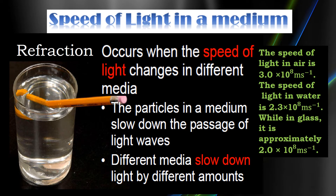Refraction of light is caused by the difference in speed of light in different media. For example, the speed of light in air is approximately 3 × 10⁸ meters per second. However, when light travels through a medium such as water or glass, its speed decreases. The speed of light in water is approximately 2.3 × 10⁸ meters per second, while the speed of light in glass is approximately 2 × 10⁸ meters per second. To describe this change in speed, we use the term index of refraction or refractive index.